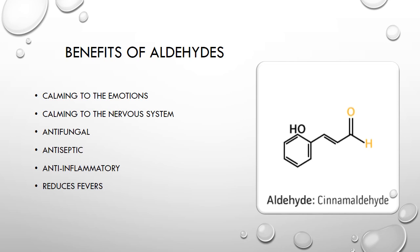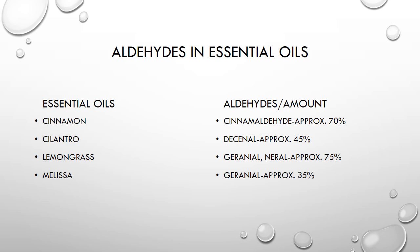The second oxygenated compound found in essential oils is aldehydes. Benefits of aldehydes include: calming to the emotions, calming to the nervous system, antifungal, antiseptic, anti-inflammatory, and reduces fevers. An aldehyde is identified by a carbon double-bonded to an oxygen with a hydrogen — this is an example of an aldehyde found in an essential oil. On this slide you have cinnamon, cilantro, lemongrass, and melissa, with the aldehyde and its percentage shown in the second column.